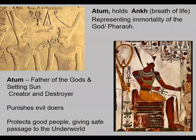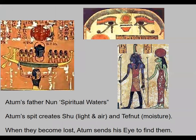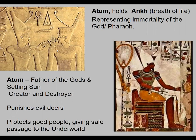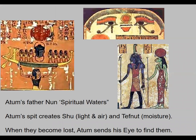Atum is the father of the gods and of Set and his son. He's kind of like Krishna — a creator and destroyer. He punishes evildoers, protects the good, and gives them safe passage to the underworld. You'll often see a big eyeball in these images — those are the eyes of Atum. Atum's father Nun was the spiritual waters. Atum's spit creates Shu and Tefnut — light and air, and moisture. One time Shu and Tefnut go out into the mist and get lost, and Atum sends his eye to look for them.